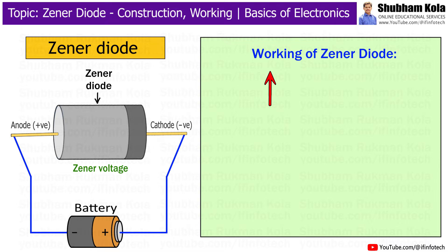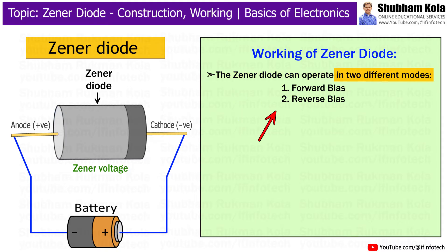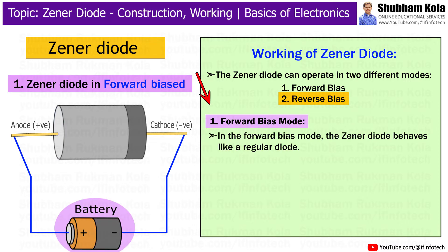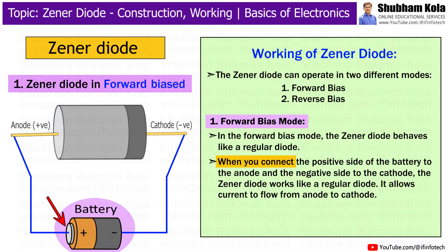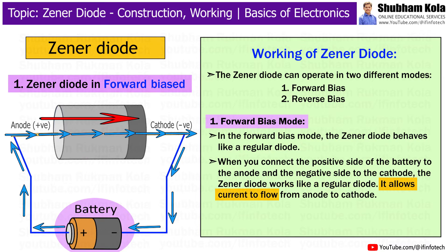Let's now understand how the Zener diode works. The Zener diode can operate in two different modes: forward bias and reverse bias. In the forward bias mode, the Zener diode behaves like a regular diode. When you connect the positive side of the battery to the anode and negative side to the cathode, the Zener diode allows current to flow from anode to cathode.